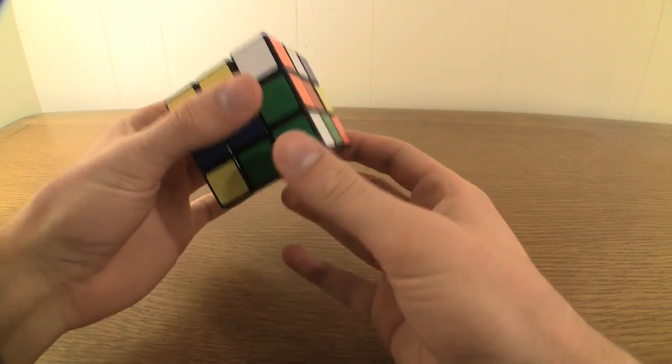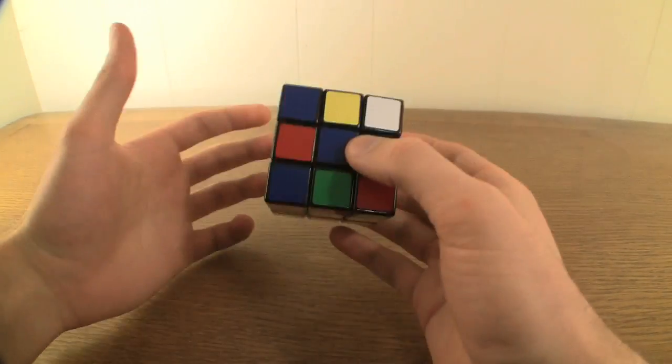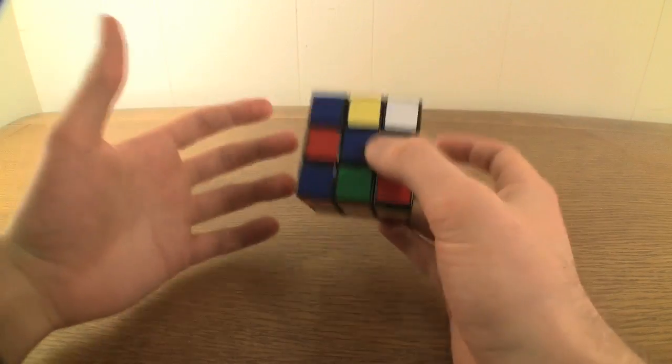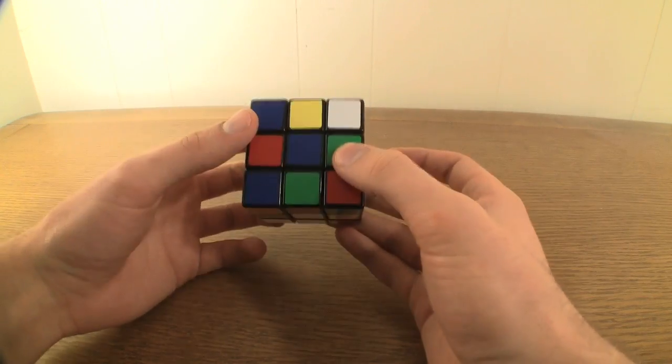No matter how you twist and turn the cube, the centers will always remain the same. Therefore, whatever color the center for a particular side is, is the color that the entire side eventually needs to be.